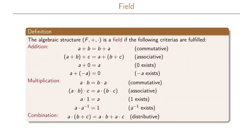So this is the complete definition of a field. The algebraic structure with the set of elements called F and the two operations called addition and multiplication is a field if the following criteria are fulfilled. For addition: the elements commute, the associative law holds, the additive zero exists, and the negative element exists for each of the elements.